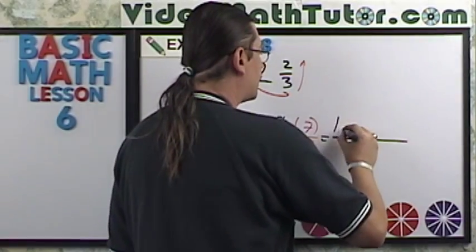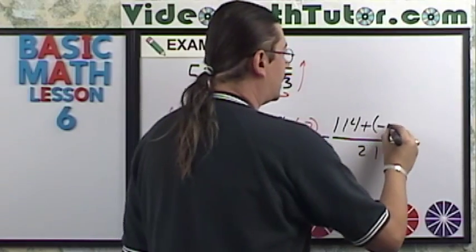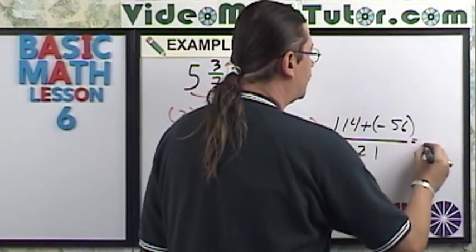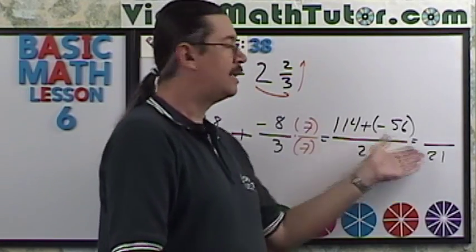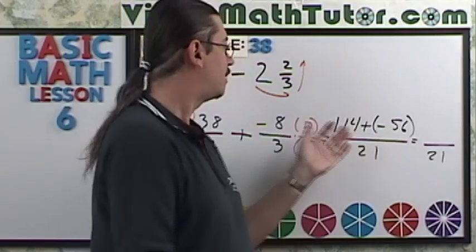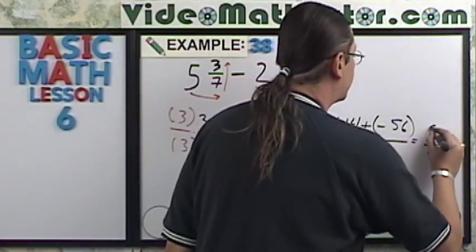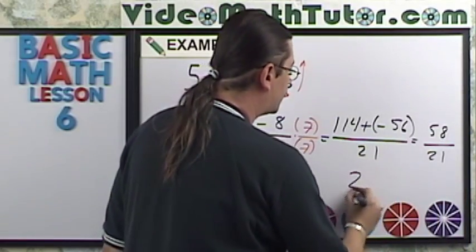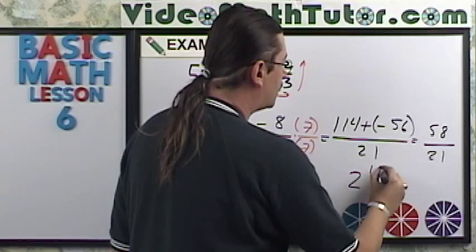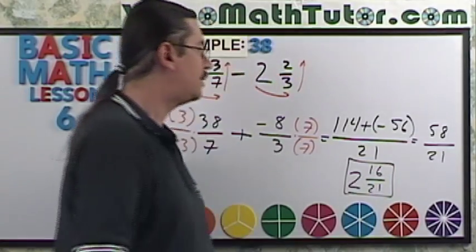And that's going to give me 114 plus over here I'm going to get negative 56. Now 114 plus a negative 56, or you can just think of this as 114 minus 56, it doesn't matter. We're going to get an answer of 58. Now 21 goes into 58 two times. Just use long division for that. My remainder is going to be 16, so there's my answer to this problem: 2 and 16/21.